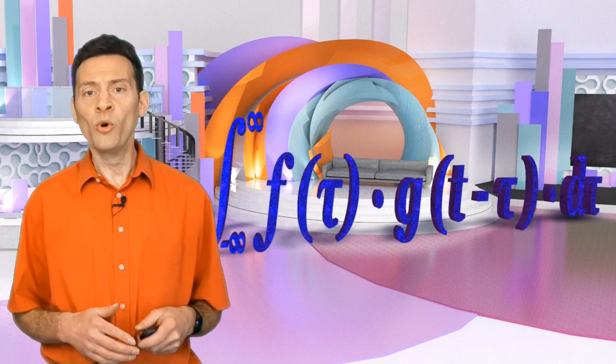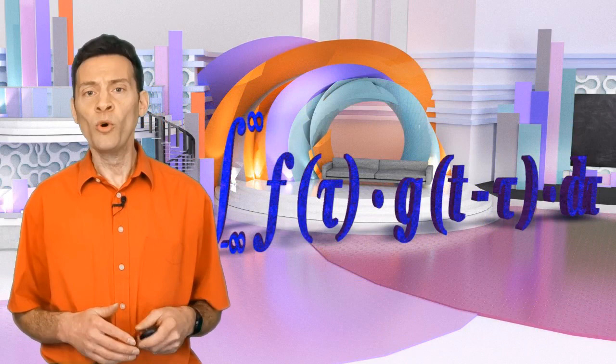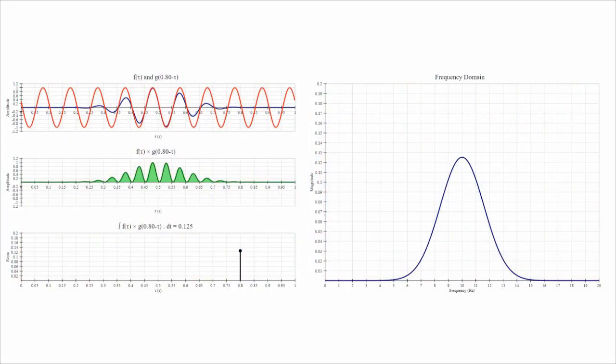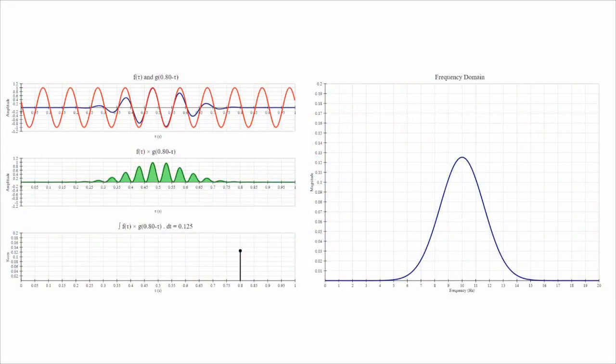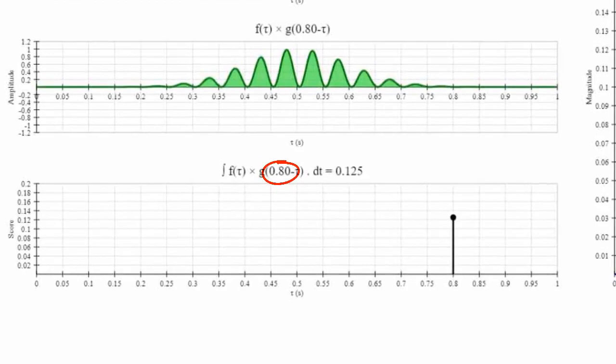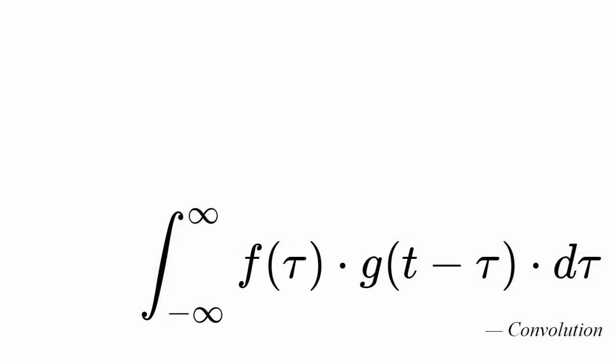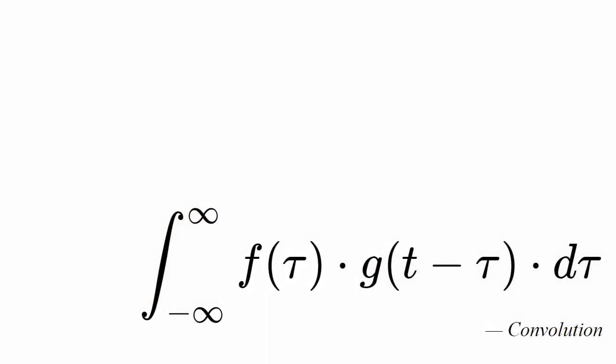However, convolution gives us more information than just which frequencies are present in the signal. While the maximum score for each sinusoidal component is proportional to its magnitude within the signal, the value of t when the score is at its maximum is proportional to its phase. With convolution being the method that the Fourier transform uses to tell you which sinusoids are present in your signal, it's hardly surprising that the convolution equation and the Fourier transform equation share certain similarities.